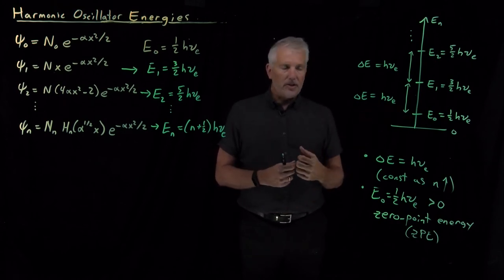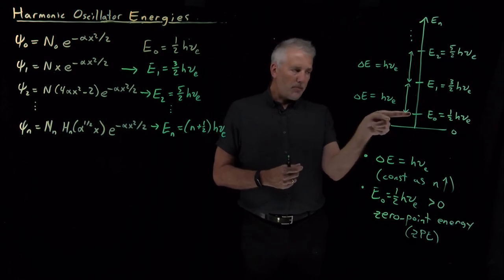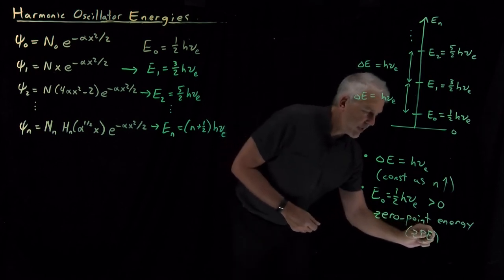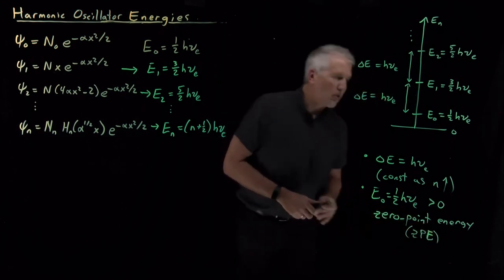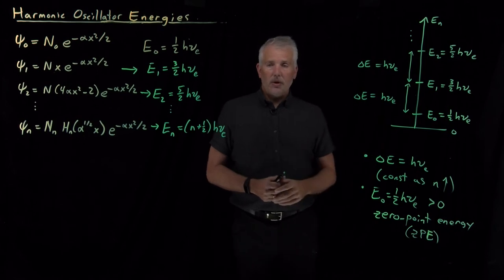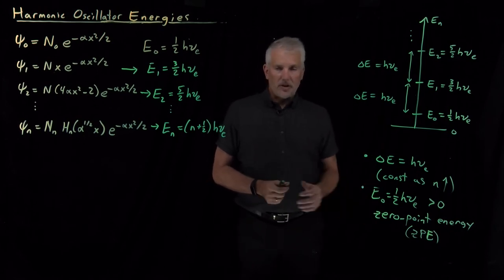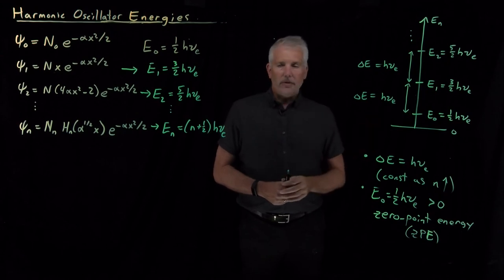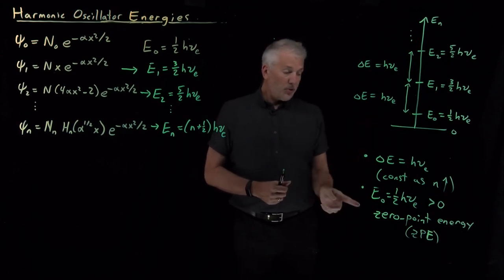We can never fully remove all the energy from the system because we can't drop below the zeroth energy level, we can't drop the energy below one-half h nu. So that's what we mean when we say this system has a zero-point energy of one-half h nu, or if the system has a zero-point energy in general, it just means that it has some energy that we can't fully get rid of in the system.